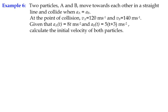Okay, it's example six. We're dealing with rectilinear motion — I did one in example five which explained the theory, so we're going straight into this. We've got two particles this time colliding. The acceleration of each of them is the same, and we're told some information at the point of collision: the velocity of one is 120 meters per second and the velocity of the other is 140.